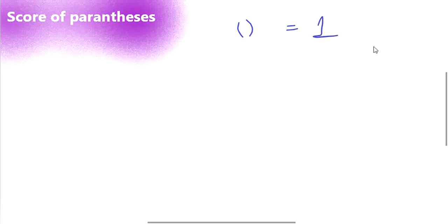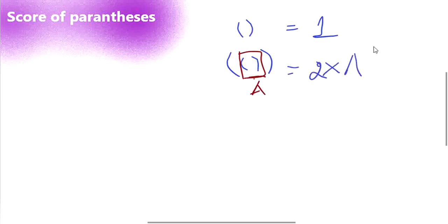Let's expand it with one more level, considering the content inside the parenthesis as A. They said if you are considering a parenthesis as A then the score is going to be 2 into A. The score of one open-closed parenthesis is 1, so 2 into 1 is going to be 2.